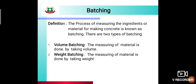Batching is of two types: first is volume batching and second is weight batching. In volume batching, the measuring of material is done by taking volume — we measure the ingredients by their volume. In weight batching, the measuring of material is done by taking its weight. The difference is that in one we measure by volume and in the other by weight. In volume batching a gauge box is used, and in weight batching a weighing machine is used. Weight batching is considered more accurate as compared to volume batching.